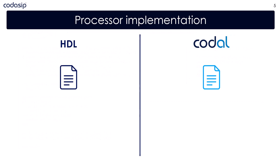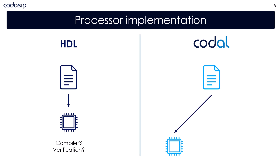So what is this automation? Designing a processor in standard HDL will give you the hardware implementation of the processor. However, for a new processor architecture you would typically need to implement a new compiler, and you should also verify the processor — tasks where the HDL implementation will not help you; you need to start implementing those from scratch. If you decide to implement your processor in Codal, this will no longer be true. The same Codal design used to obtain the hardware implementation is also used to get a compiler for the architecture as well as the verification environment.